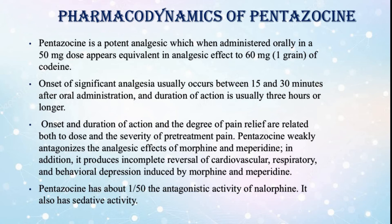Pharmacodynamics of pentazocine. Pentazocine is a potent analgesic which, when administered orally in a 50 mg dose, appears equivalent in analgesic effect to 60 mg of codeine. Onset of significant analgesia usually occurs between 15 and 30 minutes after oral administration, and duration of action is usually 3 hours or longer. Onset and duration of action and the degree of pain relief are related both to dose and the severity of pre-treatment pain. Pentazocine weakly antagonizes the analgesic effects of morphine and meperidine; in addition, it produces incomplete reversal of cardiovascular, respiratory, and behavioral depression induced by morphine and meperidine. Pentazocine has about 1/50th the antagonistic activity of nalorphine, and it also has sedative activity.